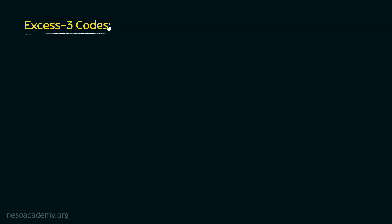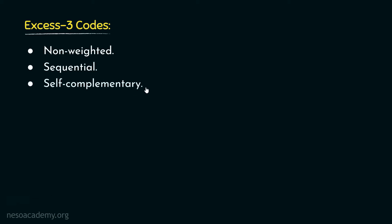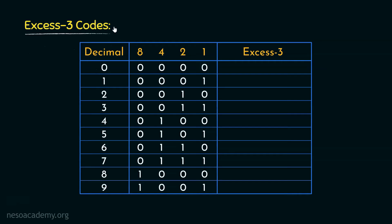Let's now move on to the XS3 codes. In the previous session we learned that XS3 codes fall under the non-weighted category; however, they are sequential and also self-complementary. For encoding the symbol 0 in decimal, we take help from the patterns of the 8421 codes. Now 0 in 8421 is encoded as four zeros, but in case of XS3, as the name suggests, instead of all zeros, we choose the XS3 pattern, that is 0011. This pattern 0011 is excess-3 (XS3) of all zeros.